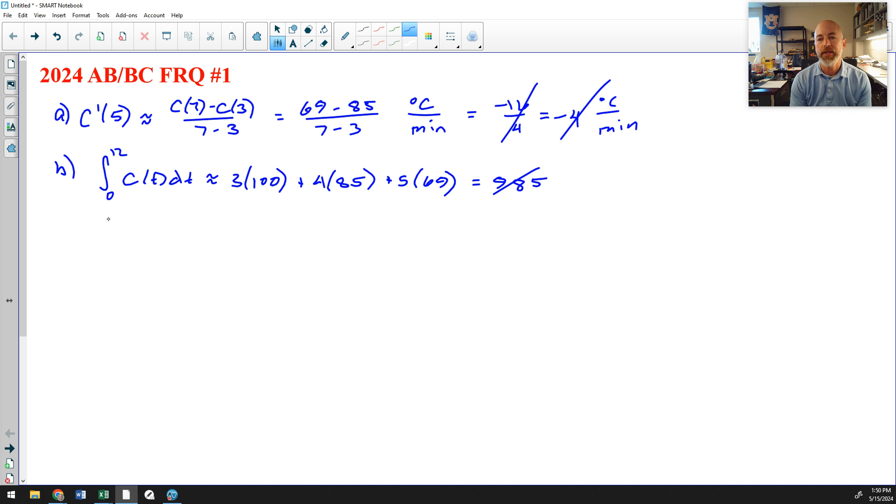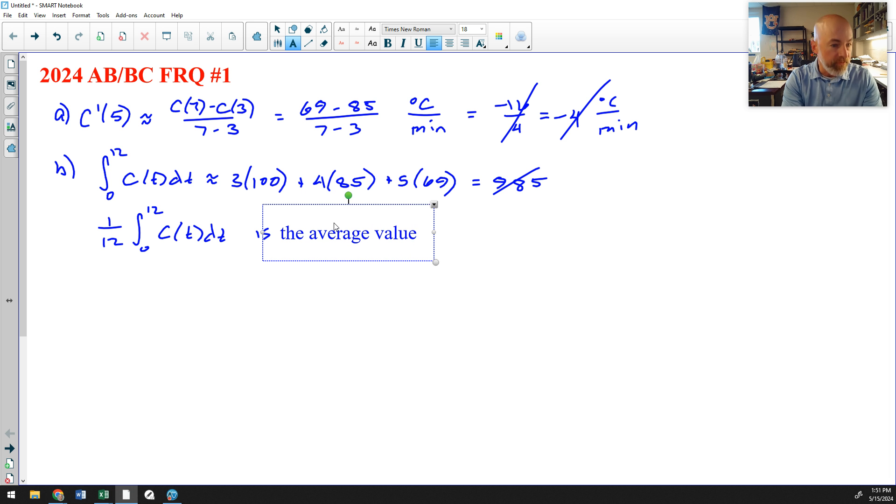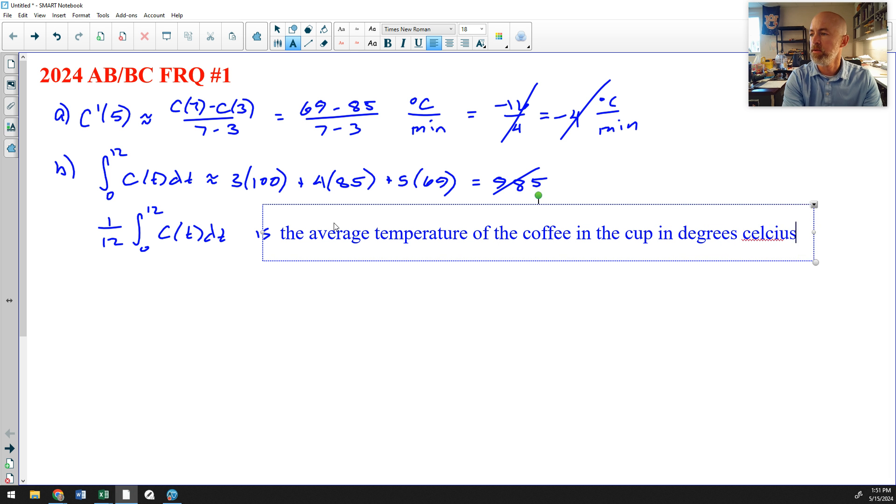Then it says to interpret the meaning of this. So one twelfth of that integral, zero to 12 of C of T DT is, and I'm going to type this out because it's faster for me to type and more easily read. Now that is your average value theorem. So you need to recognize that one twelfth out front as the average value. So this is the average value of the function C of T, which is the average temperature of the coffee in the cup in degrees Celsius on the interval zero less than T less than 12.